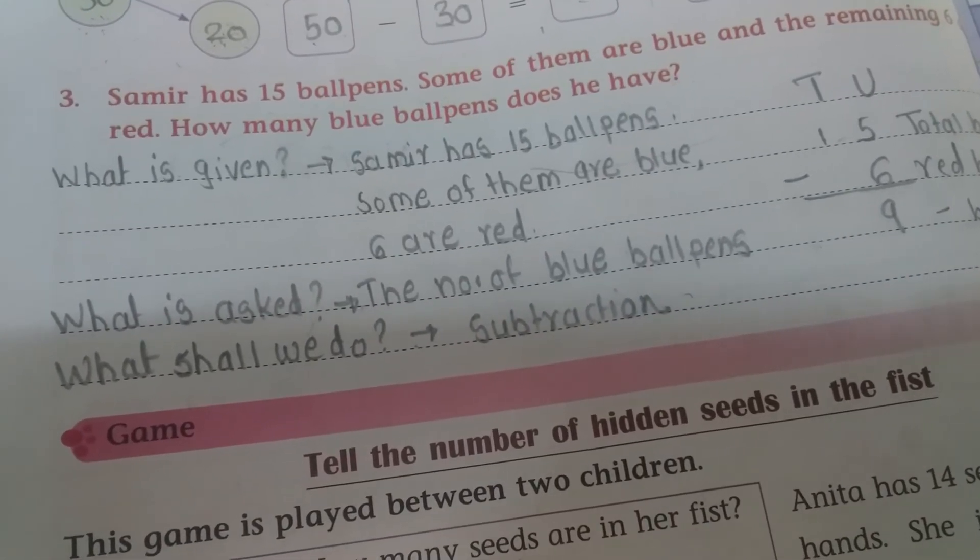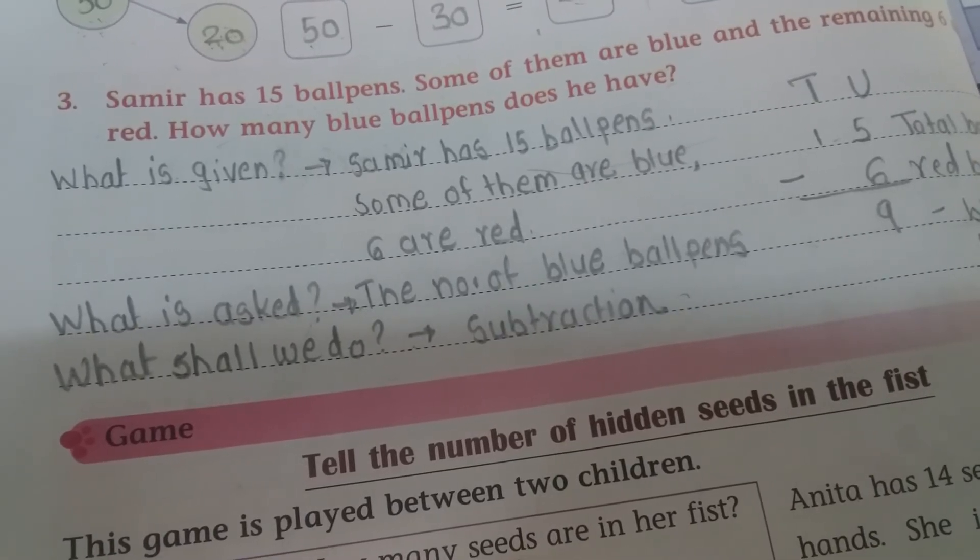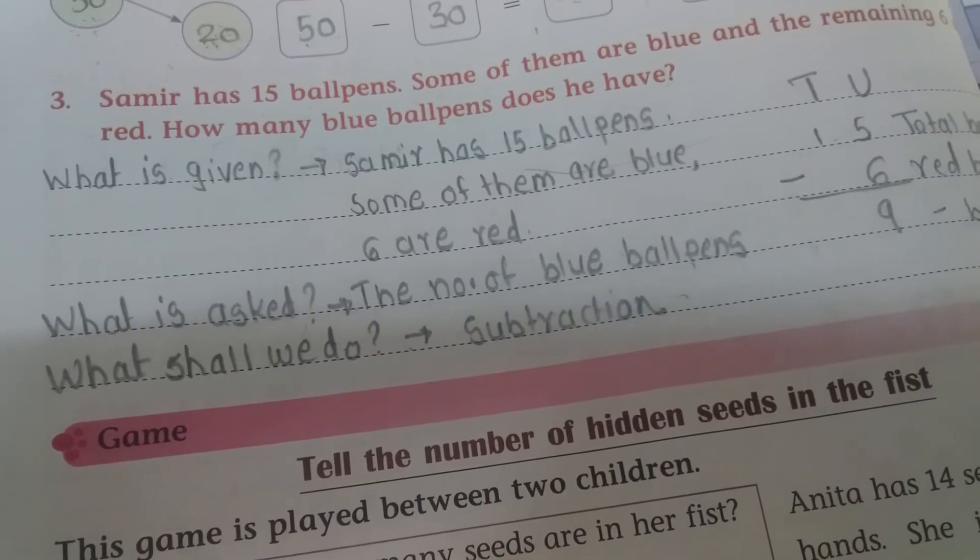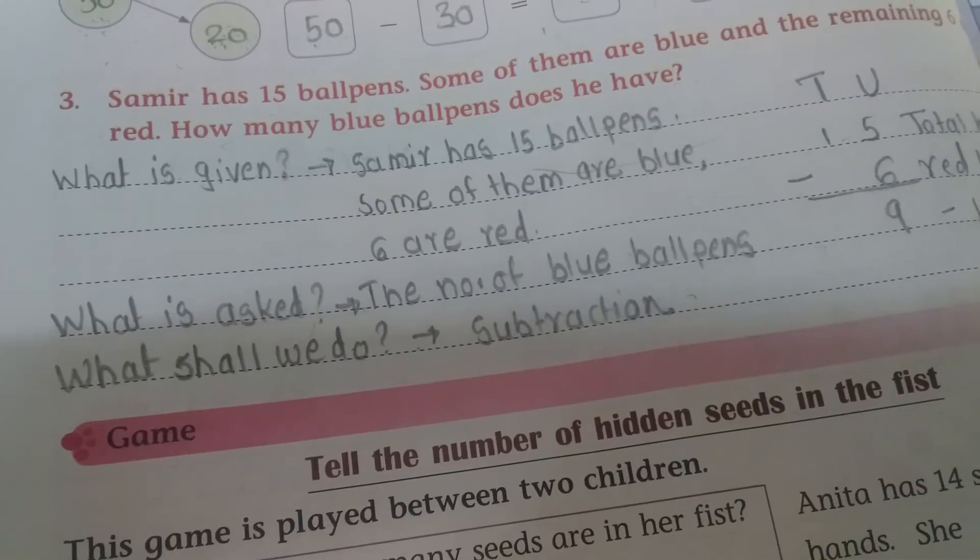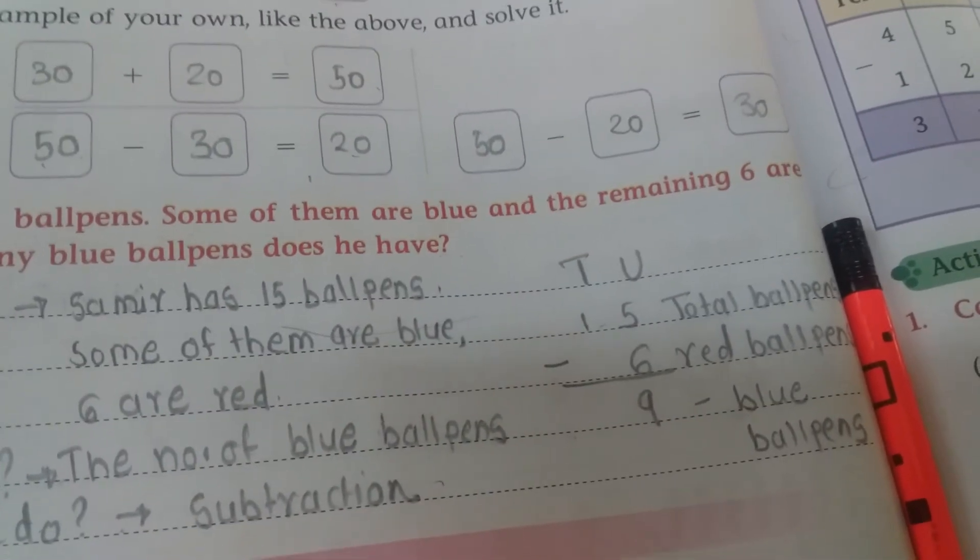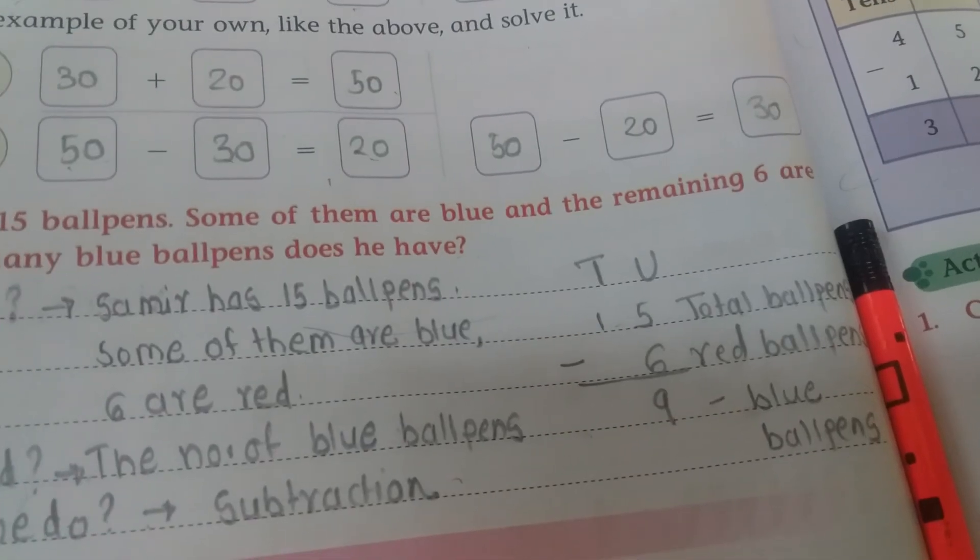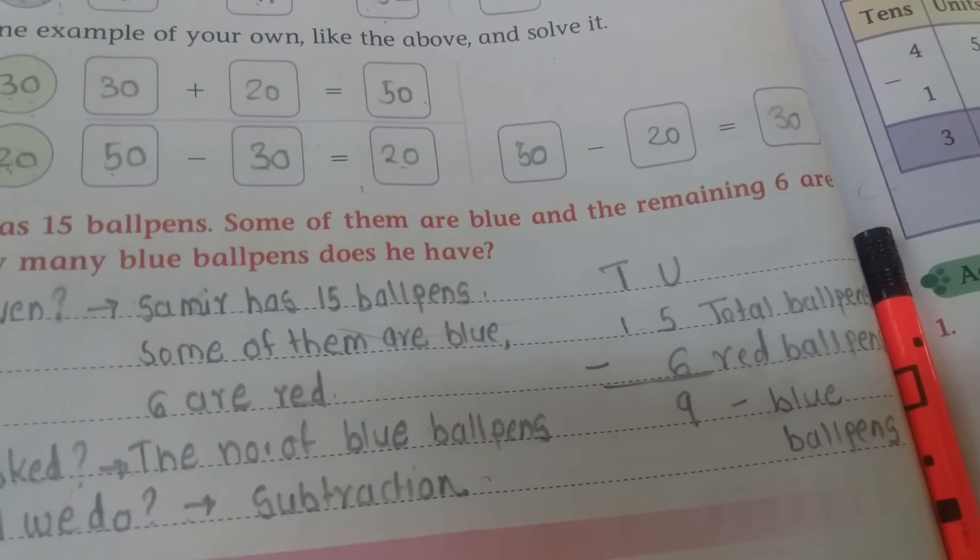We have to find out the blue ball pens. What is given? Samir has 15 ball pens, some of them are blue and 6 are red. What is asked? The number of blue ball pens. What shall we do? Subtraction. Now 15 minus 6. 15 minus 6, children. 15, what is there here? Total ball pens. 6, what is there? Red ball pens. And 9 are blue ball pens.